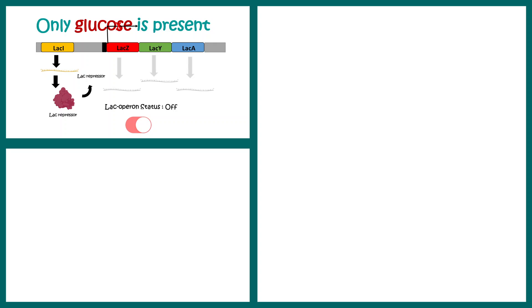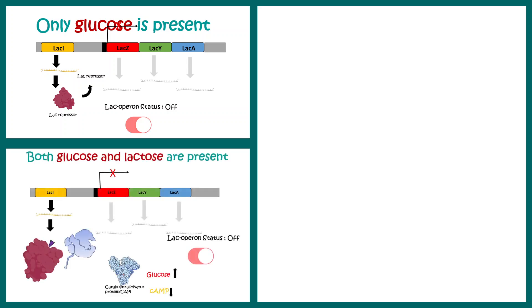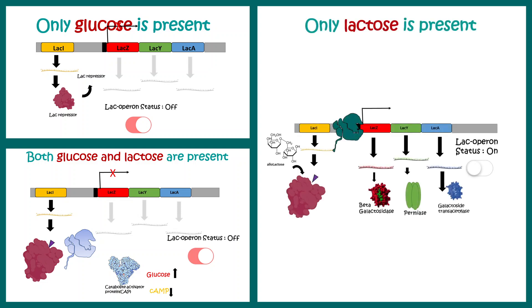When only glucose is present, bacteria choose glucose over lactose and the lactose operon is shut off — there's no need to utilize lactose. When both glucose and lactose are present, bacteria still prefer glucose, so there's no need for lactose-metabolizing genes and the lactose operon is again turned off.